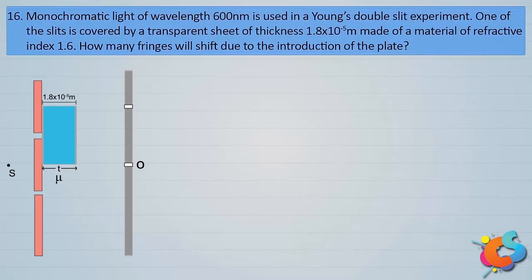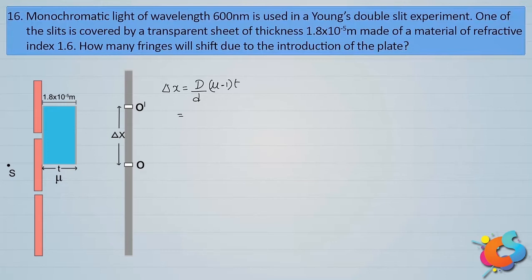For example, in this case you have placed the transparent plate in front of the upper slit; therefore, the entire fringe pattern shifts upwards. The center O shifts to O'. The quantity of shift is given by delta x, where delta x equals (D/d)×(μ−1)×t. This can also be written as (β/λ)×(μ−1)×t, where delta x is the shift in the fringe pattern.